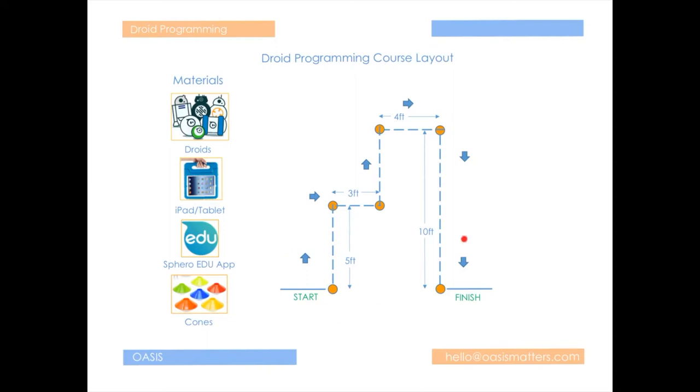So we're going to build our course which is over here. Okay, so you'll have a starting point. These orange circles here are cones. They represent the cones here and so you'll need six cones per group because each group will make their own course. Okay, each group will make their own course and so that you can drive your Sphero Mini on that course.